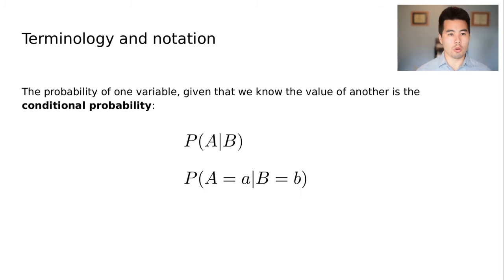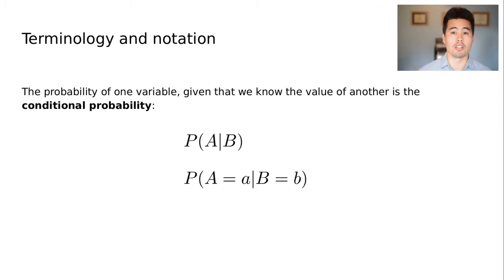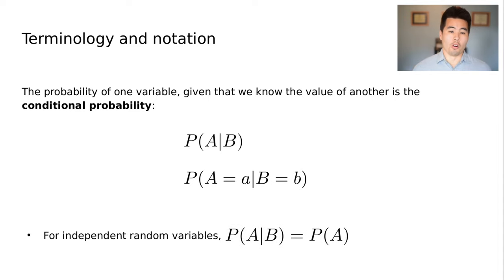I want to introduce a few more quick notations and terms, one of them being conditional probability — the probability of one event A happening given that we know event B has happened. The vertical line here means 'given' or 'conditioned on.' Usually this is shown in short form as the probability of A given B. For independent random variables, the probability of A happening is independent of whether B happened, so the conditional probability of A given B is simply the probability of A.